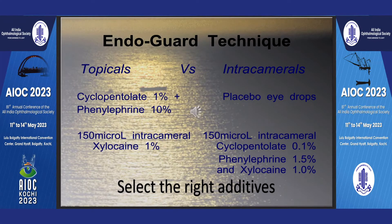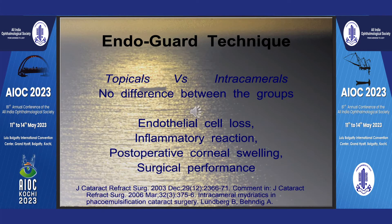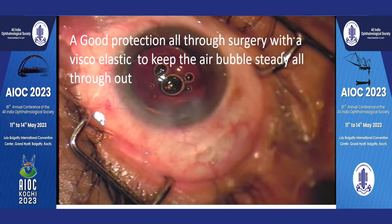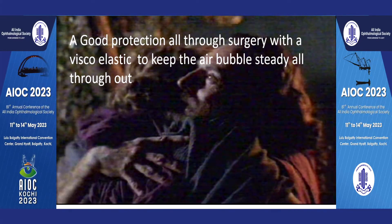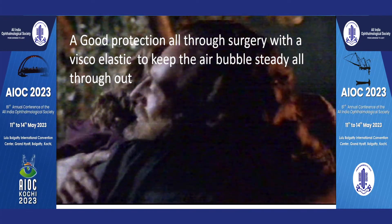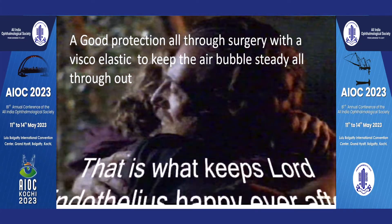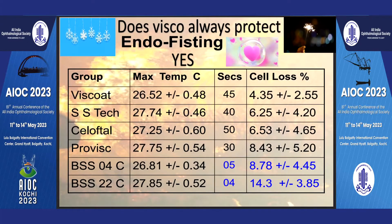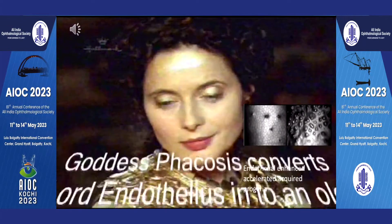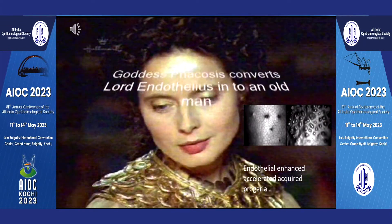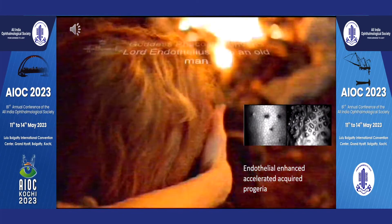What is the effect when topicals or intracamerals are used? BSS at 4 degrees centigrade and BSS at 22 degrees centigrade show quite a bit of cell loss, but with Viscoat and other viscoelastic substances, even at 30 seconds there is not much damage.